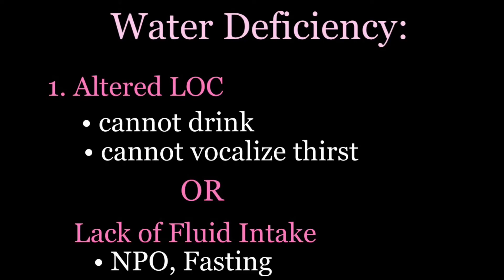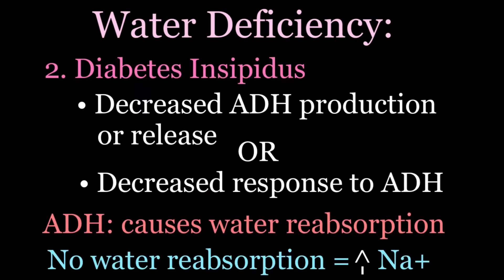Another cause of water deficiency is fasting or NPO status. Diabetes insipidus is also a cause — this involves a decreased amount of antidiuretic hormone, whether it isn't being produced, released, or the kidneys aren't responding to it. Since ADH helps us reabsorb water, if we aren't reabsorbing water we are excreting it all, and without enough water in the bloodstream we become hypernatremic.